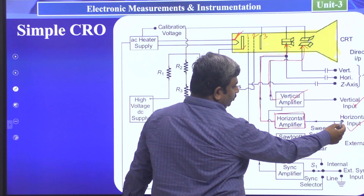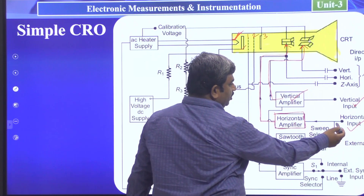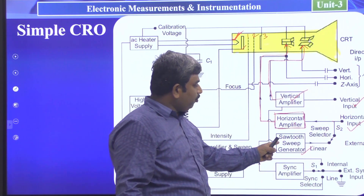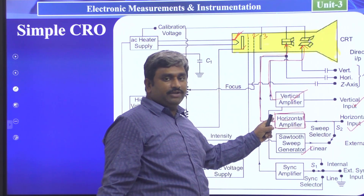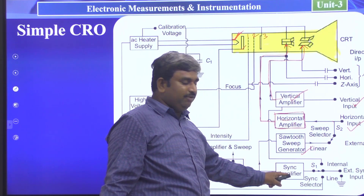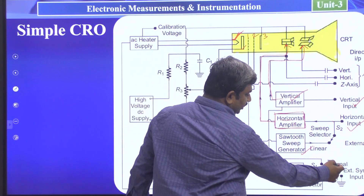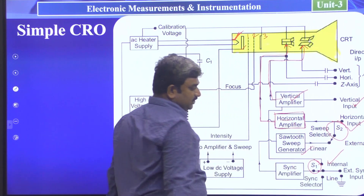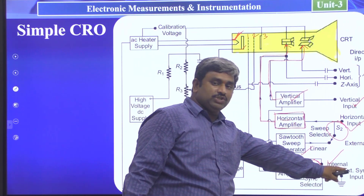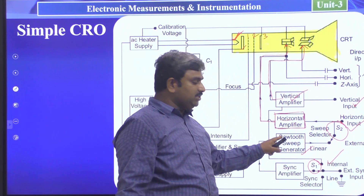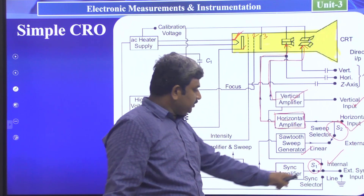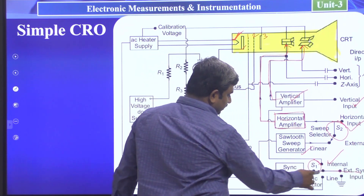The horizontal input is not only connected to the horizontal amplifier — the horizontal amplifier input is also connected to a sawtooth wave generator. The output of the sawtooth wave generator is connected to the horizontal amplifier. This sawtooth sweep generator is controlled by the sync amplifier, which is connected to switch S1.